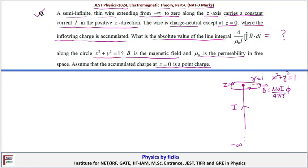If we have to find, let us see what will be closed integral B dot dl. At this point there is magnetic field due to current only and there will be no magnetic field due to accumulated charge, we will get only magnetic field.